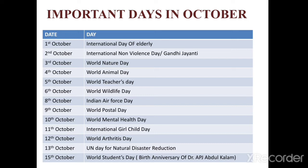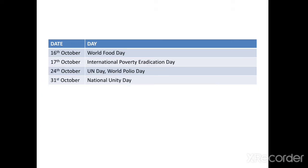9th of October is World Postal Day. 10th of October is World Mental Health Day. 11th of October is International Girl Child Day. 12th of October is World Child Day and also World Arthritis Day. 13th of October is UN Day for Natural Disaster Reduction. 15th of October is World Students Day, on the birth anniversary of Dr. APJ Abdul Kalam. 16th of October is World Food Day. 17th of October is International Poverty Eradication Day. 24th of October is World Polio Day and UN Day. 31st of October is National Unity Day.